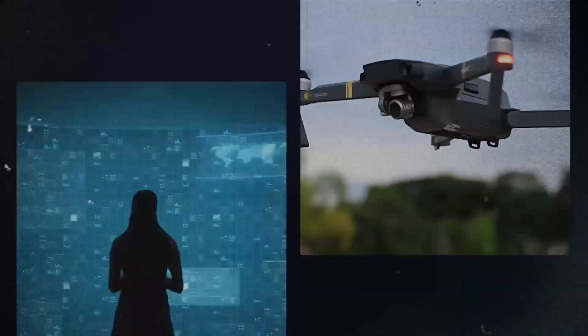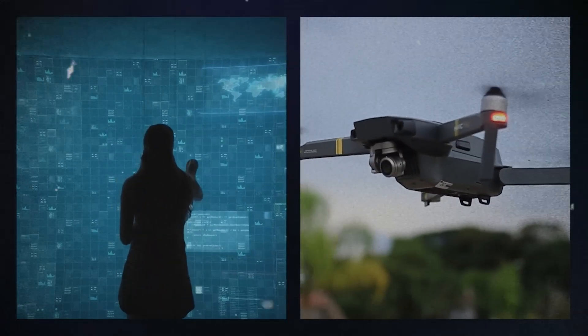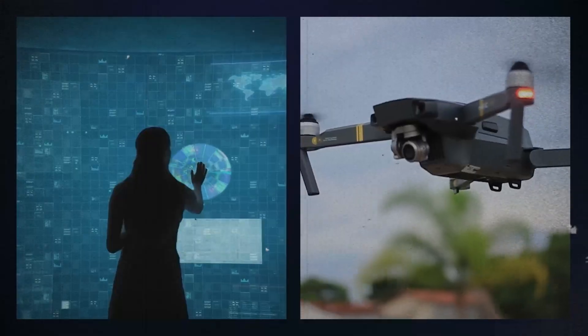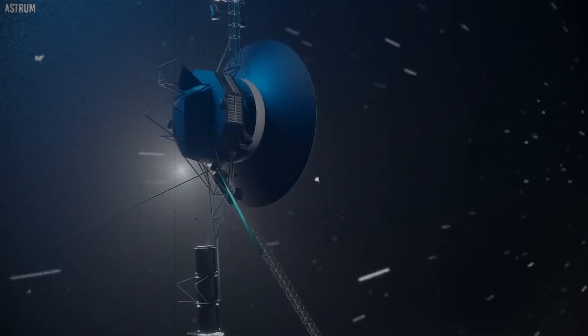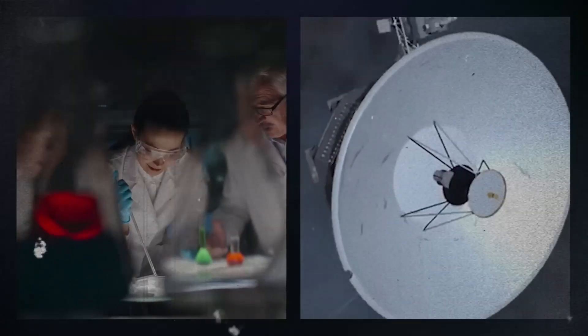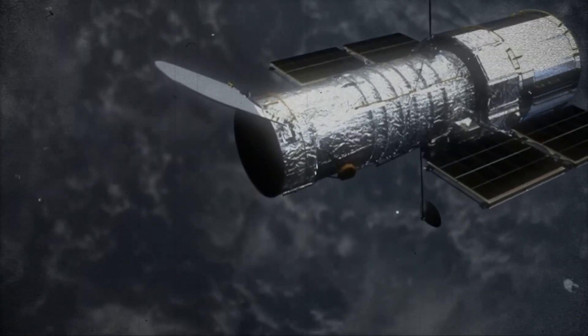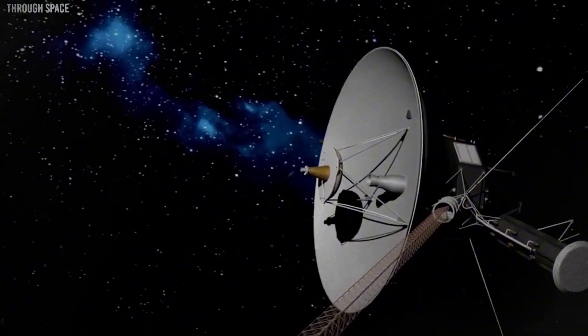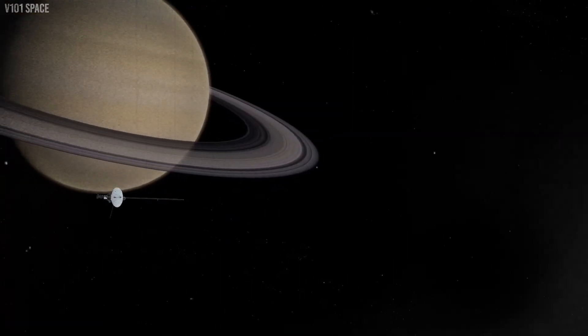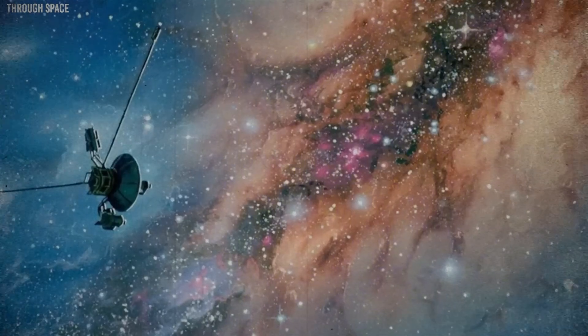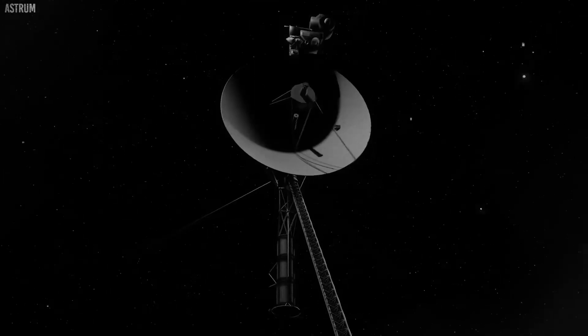They have left the heliosphere and continue to send data back to Earth. The memory capacity of the Voyagers is about one 13-millionth of that of a modern smartphone. Their communication speed is about one 138-thousandth of today's standard. Although the technology was state-of-the-art at the time, it has now become outdated. Despite carrying old equipment, these probes have reached the farthest points from Earth and represent the forefront of space exploration.